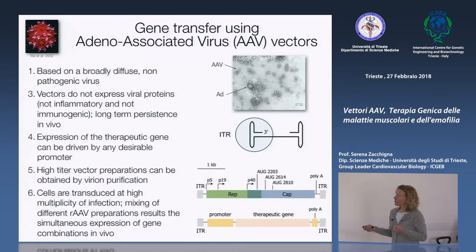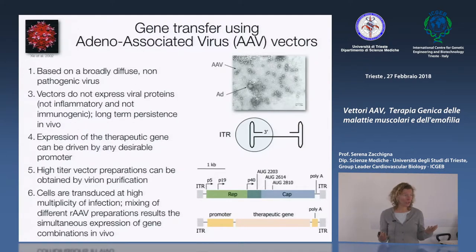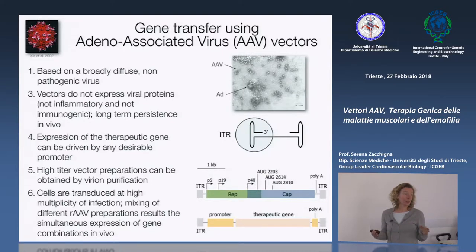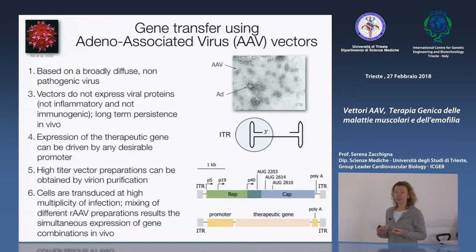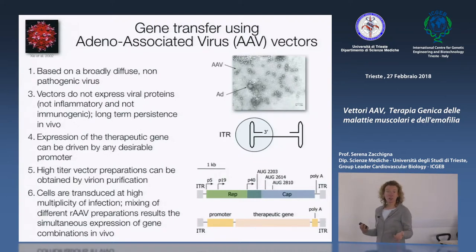Perché ci piacciono questi vettori per fare terapia genica? Prima di tutto, perché AAV è un virus molto diffuso nella popolazione: oltre l'80% di noi presenta anticorpi contro AAV. Questo fa sì che questi vettori siano molto sicuri, poiché l'ampia diffusione di AAV non è mai stata messa in correlazione con nessuna malattia umana. D'altra parte, questa preimmunità può essere un fattore limitante nell'utilizzo terapeutico.